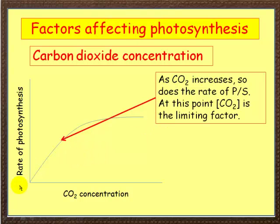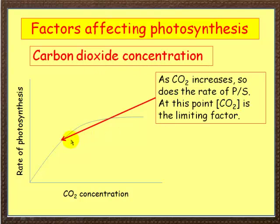Now carbon dioxide. Same sort of graph: along here you've got carbon dioxide concentration, and up here, rate of photosynthesis. As carbon dioxide concentration increases, so does the rate of photosynthesis. At this part of the graph, carbon dioxide is the limiting factor. The symbol here represents concentration of carbon dioxide — a shorthand way of writing that long term, so please don't get confused by it.